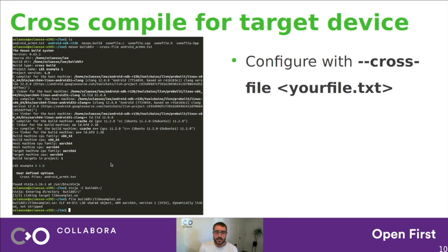Now that we have written that file, we can pass it to the meson setup command line with --cross-file. And as you can see, it's going to use the Clang compiler from the Android NDK to compile our small example project. Meson does the setup and configuration part, then Ninja does the build. And as you can see, the shared library is cross-built for the ARM architecture.